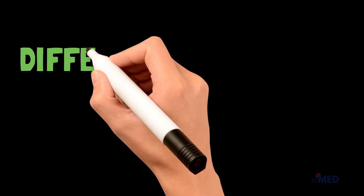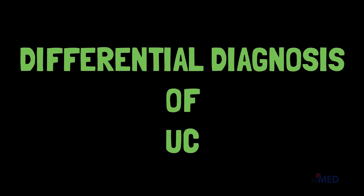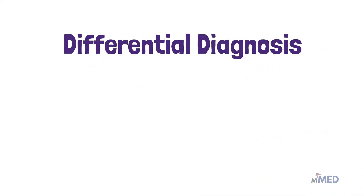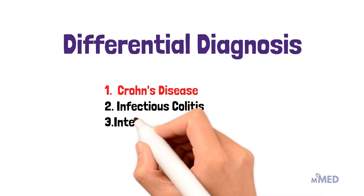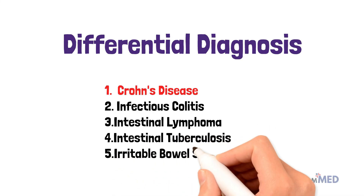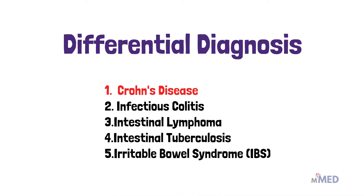The differential diagnoses of ulcerative colitis include Crohn's disease — very similar but affecting all layers of the GI tract — as well as infectious colitis, intestinal lymphoma, intestinal tuberculosis, and irritable bowel syndrome.